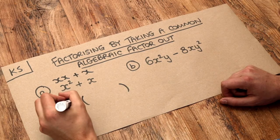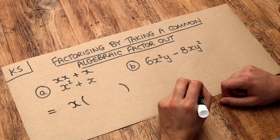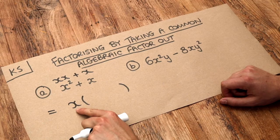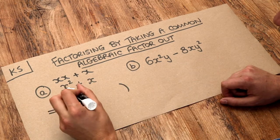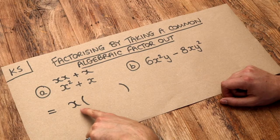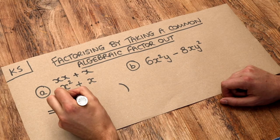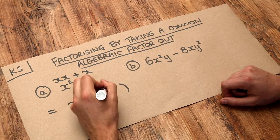So what we do is we write our bracket and we write an x on the front. Whatever's common goes on the front and then we think about expanding because usually the way we expand is to do the thing on the front of the bracket multiplied by each of the things inside the bracket.